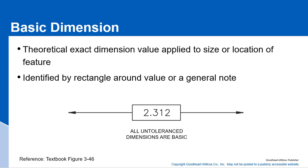Next, we want to talk about basic dimensions — that's the theoretical exact dimension. We talked about that in the last lecture. It's the size or location dimension that doesn't have a tolerance, because the feature control frame somewhere on the drawing tells you what the tolerance is for that feature. It's a dimension used in GD&T, and we indicate it by putting a rectangle around it.